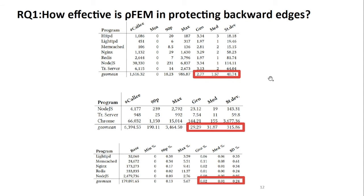Coming now to the results. In the upper table, we can see that after compiling programs with our application, we have a geo-mean of 2.77 return call sites per callee across all programs. When recompiling considering only virtual function calls, we have 29 call sites per callee, because the subclass hierarchies are pretty large. For these programs, we also counted the number of instructions usable to craft an attack: in geo-mean, per thousand instructions, only 0.02 can be used for performing an attack, showing very good results.